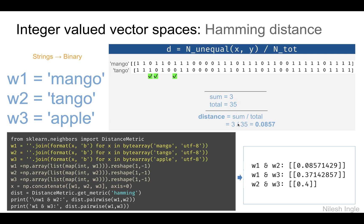When we calculate the distance, it's 3 divided by 35, which equals 0.0857. That's the Hamming distance from mango to tango, w1 to w2, and that's shown here in the box. Here we have the code in Python which creates the binary array, reshapes it, and then uses it as input to the DistanceMetric command to calculate the Hamming distance.